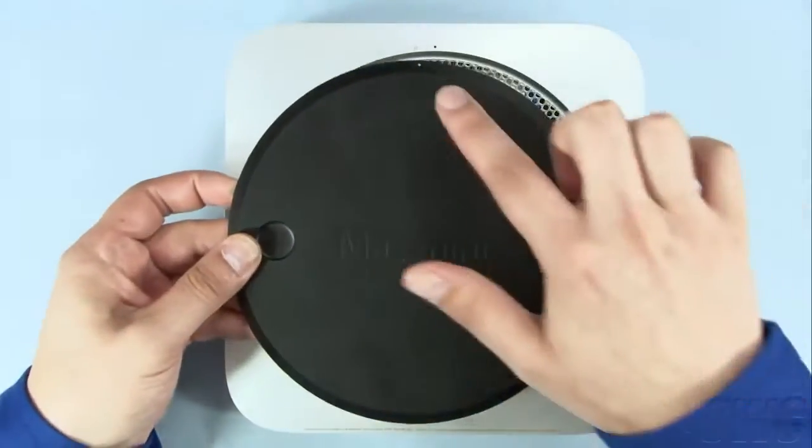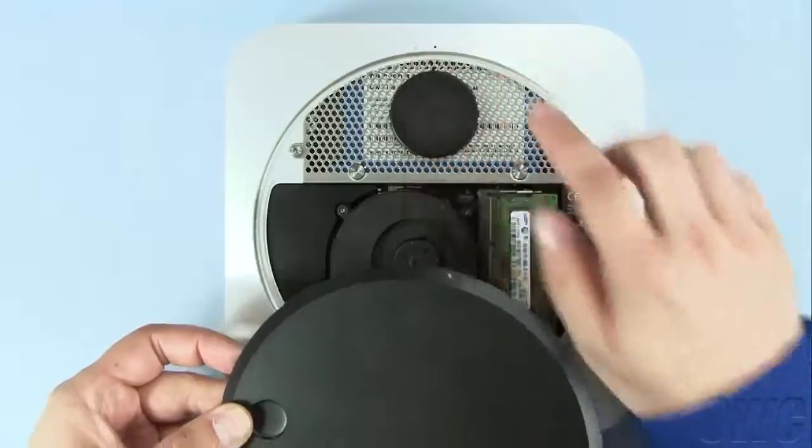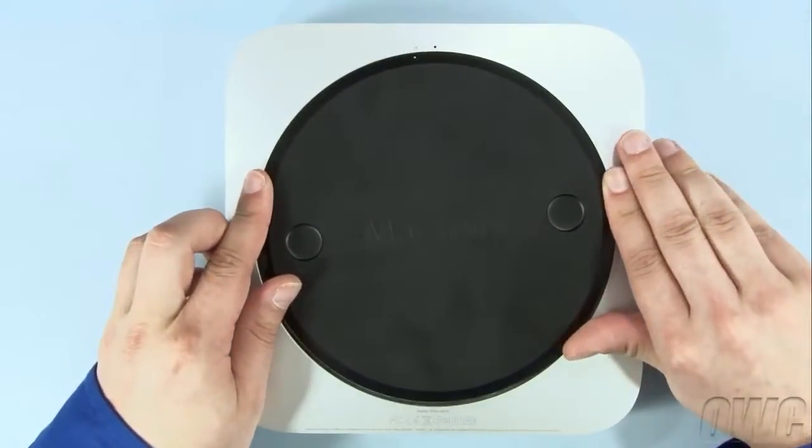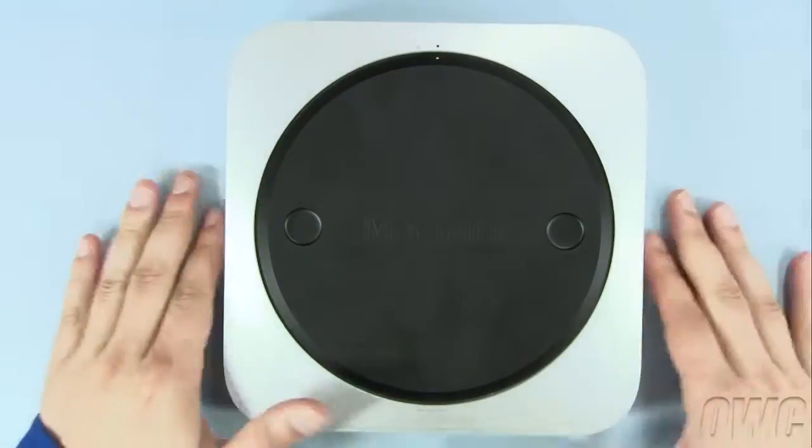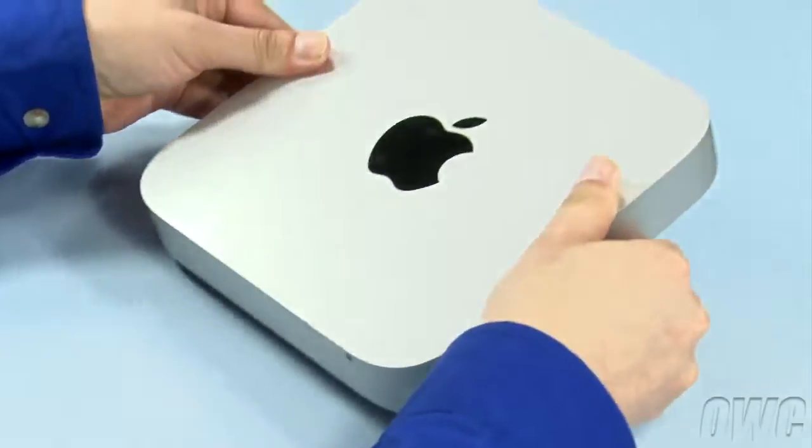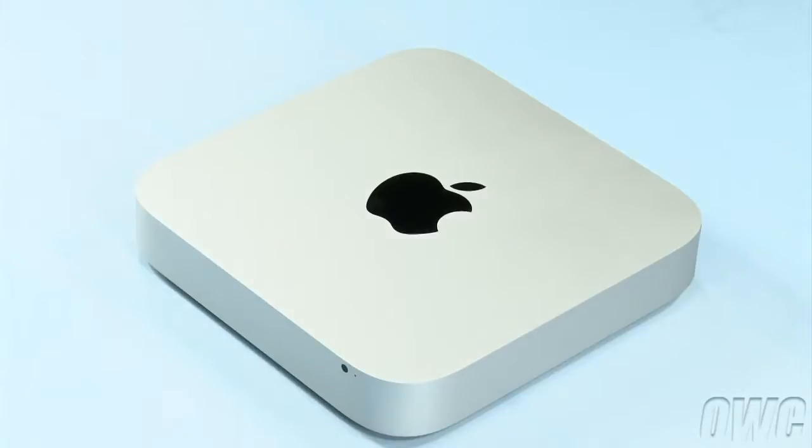Put the bottom cover onto the mini, making sure that both white dots line up. Then, rotate the bottom cover clockwise until the black and white dots are aligned. You may now flip your mini over, hook it back up, and turn it on.